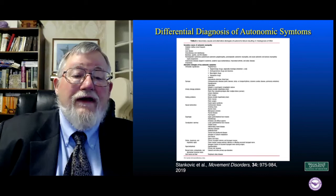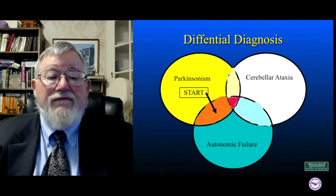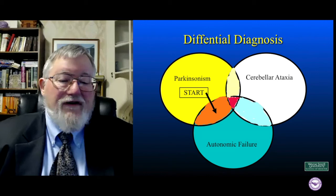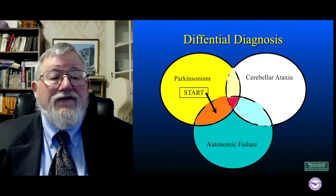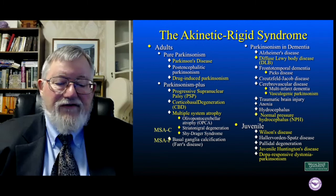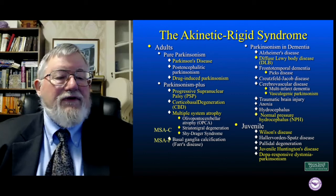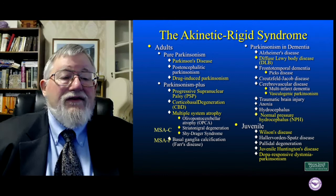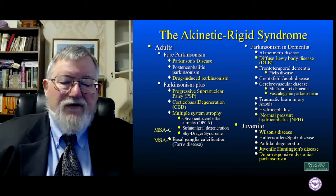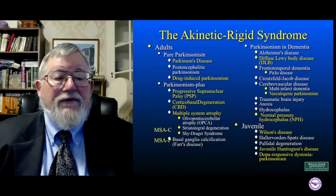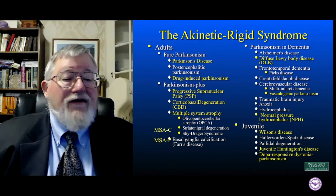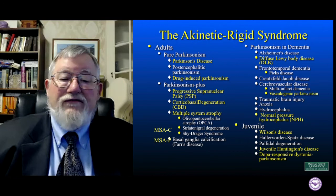A lot of patients, particularly in North America, start out with Parkinsonism and then move towards having autonomic failure. Parkinsonism also has a fairly large list of potential diagnoses. Here you see a list of the akinetic rigid syndrome — another term for Parkinsonism-type symptoms, specifically without the tremor. In the bottom right corner of the slide are juvenile-onset diseases that we don't have to worry about, because people who develop multiple system atrophy will tend to be adults by the time they develop symptoms. But on this list, for pure Parkinsonism, Parkinson's disease is by far the most common item.